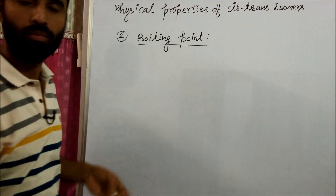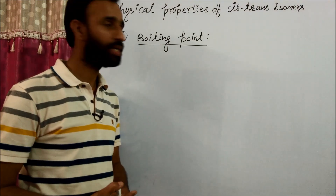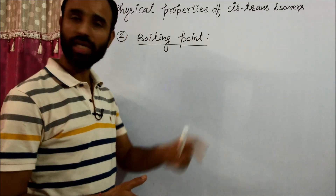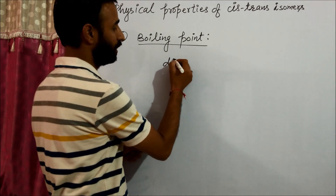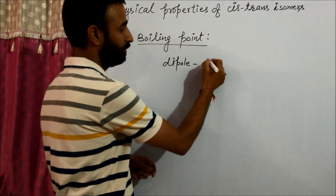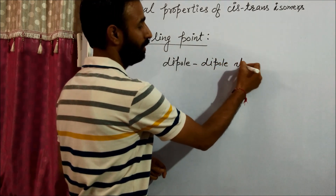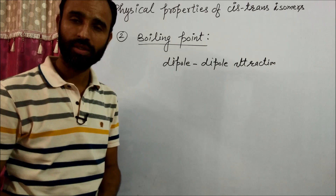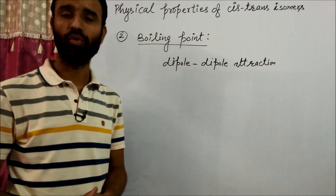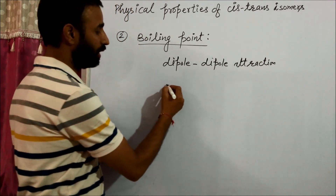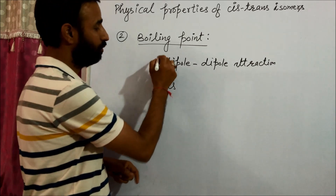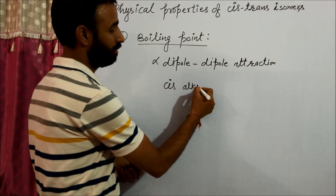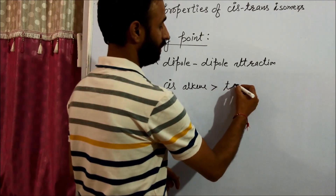The second property is boiling point. Cis alkene has a higher dipole moment than trans alkene. Boiling point is due to intermolecular attraction, and if molecules are polar, there is dipole-dipole attraction. Since cis alkene has a higher dipole moment, dipole-dipole attraction in cis alkene is greater than in trans alkene. That is why cis alkene has a higher boiling point than trans alkene.